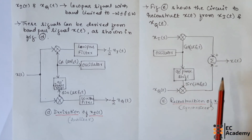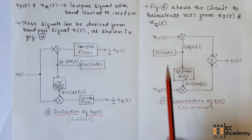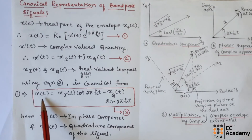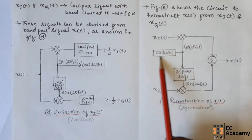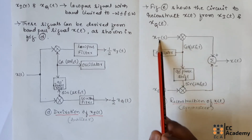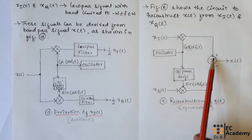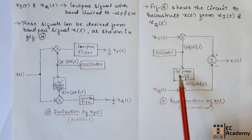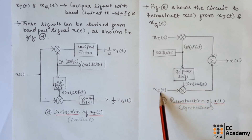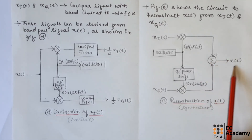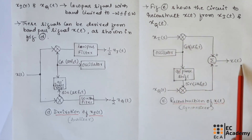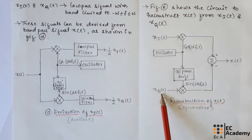Figure E shows the circuit to reconstruct x(t) from xI(t) and xQ(t). We know that x(t) is equal to xI(t)·cos(2πfct) minus xQ(t)·sin(2πfct). Using an oscillator, we produce the signal cos(2πfct), which is multiplied with xI(t) and given to a summation. For the sin term, we take a 90-degree phase shift to obtain sin(2πfct), which is multiplied with xQ(t) and given to the summation with a negative sign. The result is x(t) equal to cos(2πfct)·xI(t) minus sin(2πfct)·xQ(t). This circuit is also known as a synthesizer.